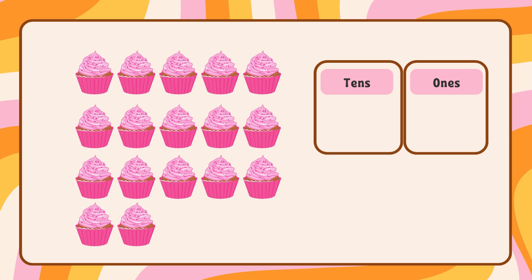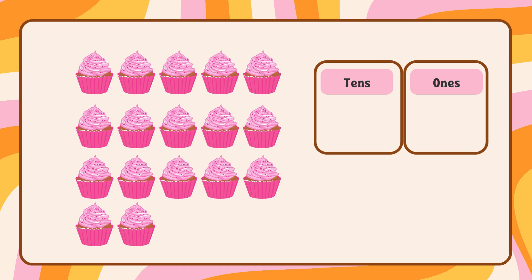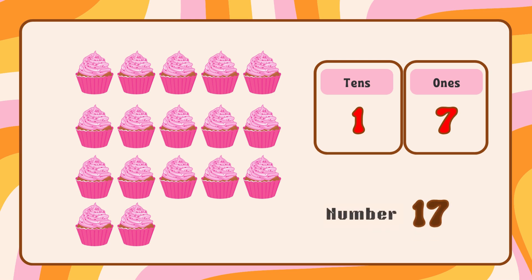1, 2, 3, 4, 5, 6, 7, 8, 9, 10. We have 1 tens. Let's keep counting. 1, 2, 3, 4, 5, 6, 7. We have 7 ones. So in this group we have 1 tens and 7 ones. And that's number 17.